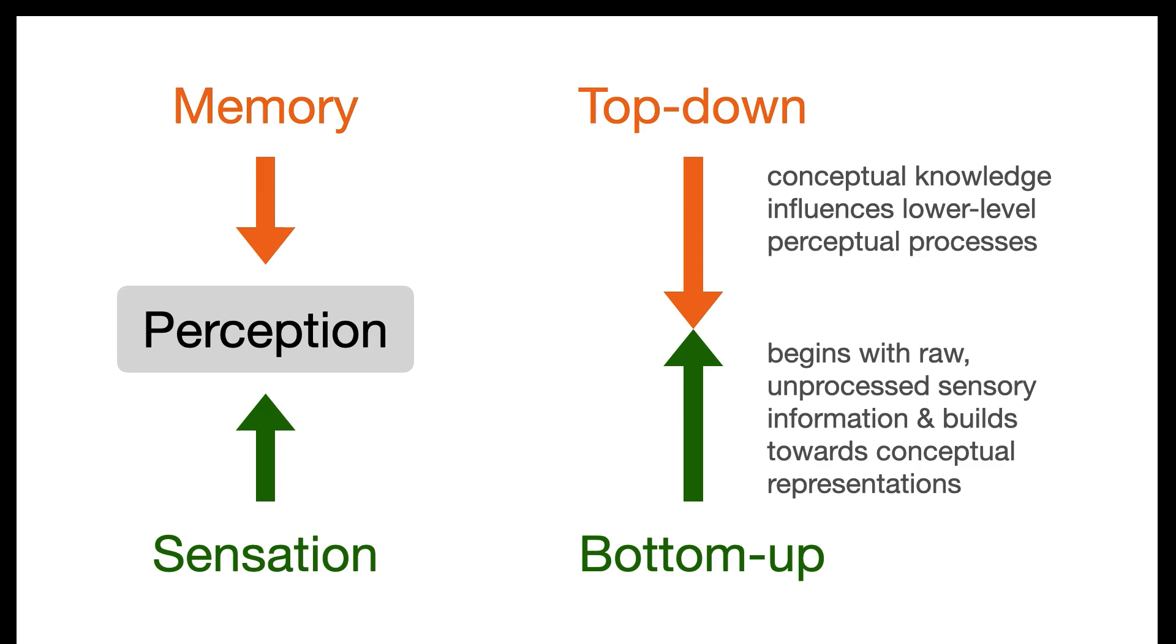As sensory information is coming in, our brains are making predictions of what it might be based on what it already knows. Most of the time the brain gets it right, but sometimes it can be quite wrong.